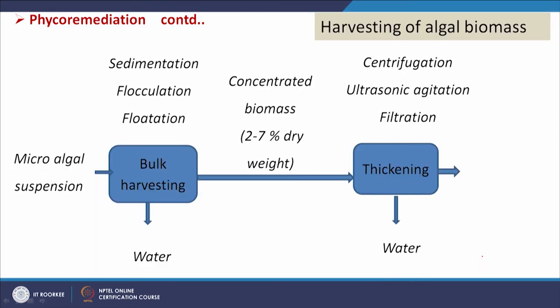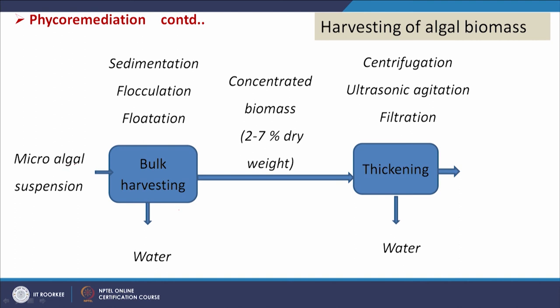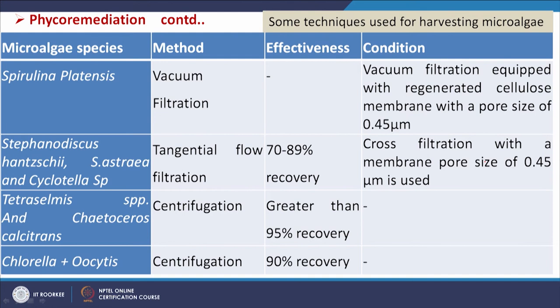Now we discuss harvesting of algal biomass. Algal growth occurs in the photobioreactor and when treated water exits, algal biomass must be harvested. The concentration of algal biomass in treated water is very low, so concentration is needed in two steps. First, bulk harvesting — microalgal suspensions are concentrated through sedimentation, flocculation and flotation — to reach 2 to 7 percent dry weight. Then thickening further using centrifugation, ultrasonic agitation, filtration or combinations thereof yields pure water and concentrated algal biomass.